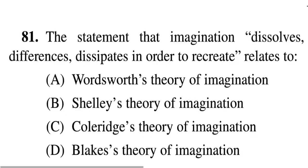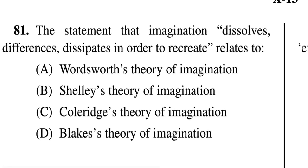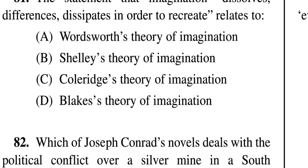Question 81: The statement 'imagination dissolves, diffuses, dissipates in order to recreate' relates to whose theory of imagination? Options: A — Wordsworth's theory, B — Shelley's theory, C — Coleridge's theory, D — Blake's theory. The correct answer of question 81 is C — Coleridge's theory of imagination. This is very important, please remember.